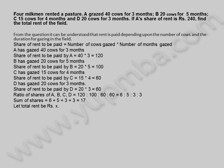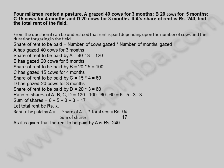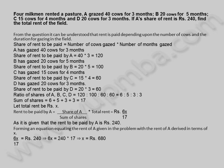Sum of shares is equal to 6 + 5 + 3 + 3 = 17. Let total rent be X rupees. Rent to be paid by A equals share of A divided by sum of shares multiplied by total rent, which is 6X / 17 rupees. As it is given that the rent to be paid by A is 240 rupees, equating: 6X / 17 = 240, implies 6X = 240 × 17, implies X = 680 rupees. The total rent of the field is 680 rupees.